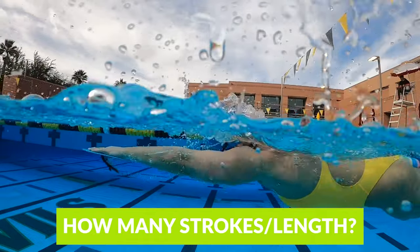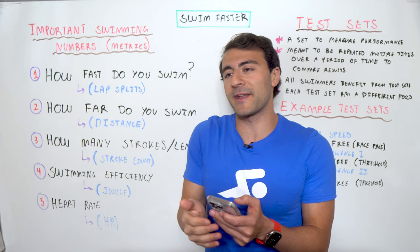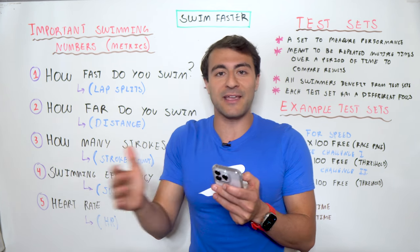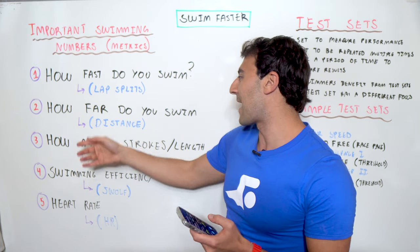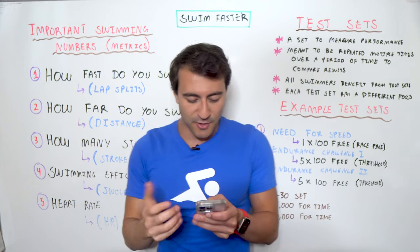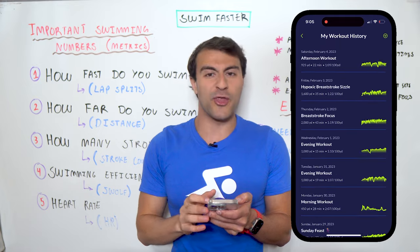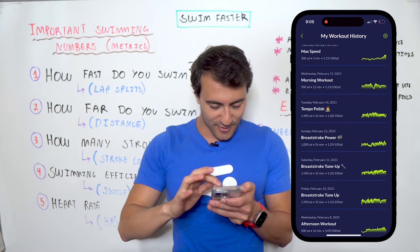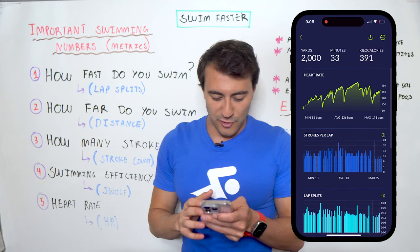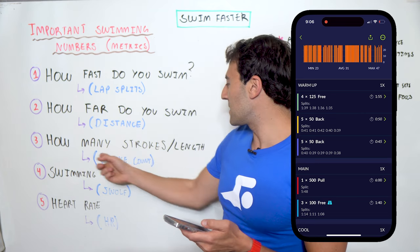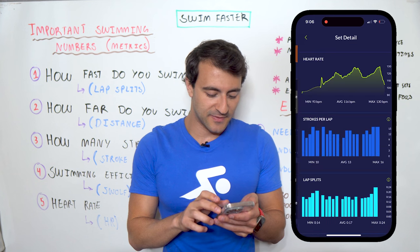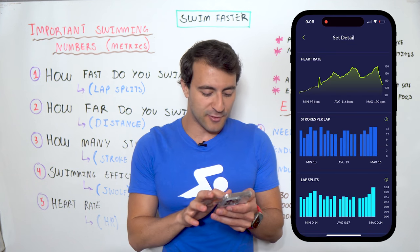The third metric is: how many strokes per length do you take — the stroke count. This is really important, and it depends on whether you're in a 25-yard, 25-meter, or 50-meter pool, since the length of the pool changes everything. Let me go back and find 'The Beast' workout to illustrate this.